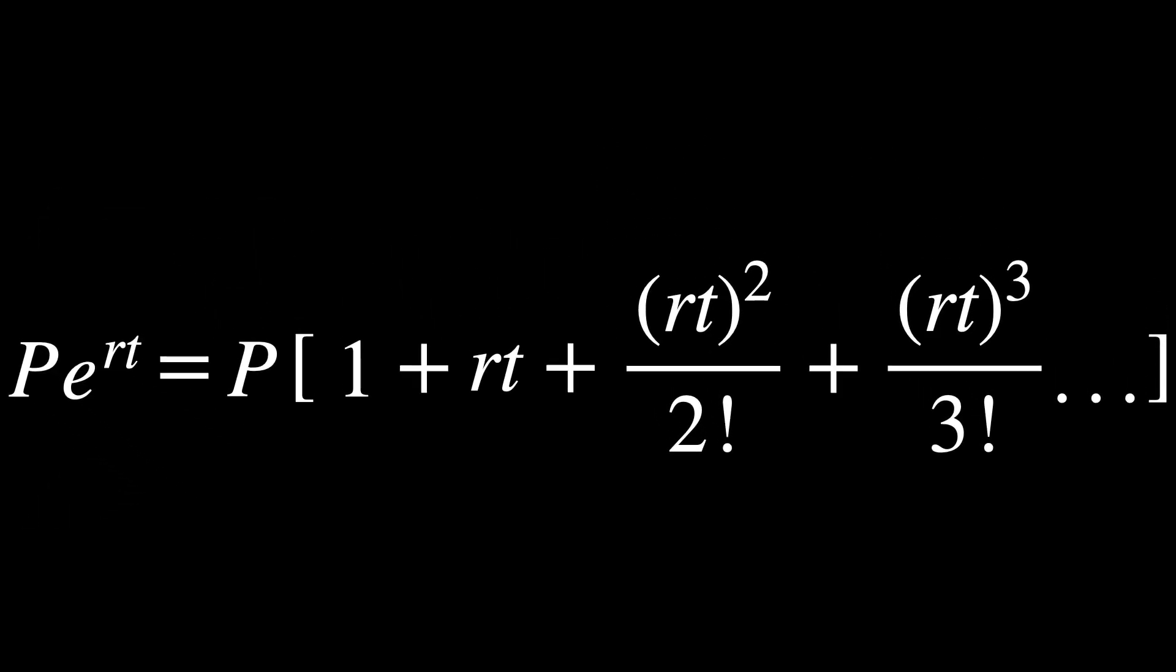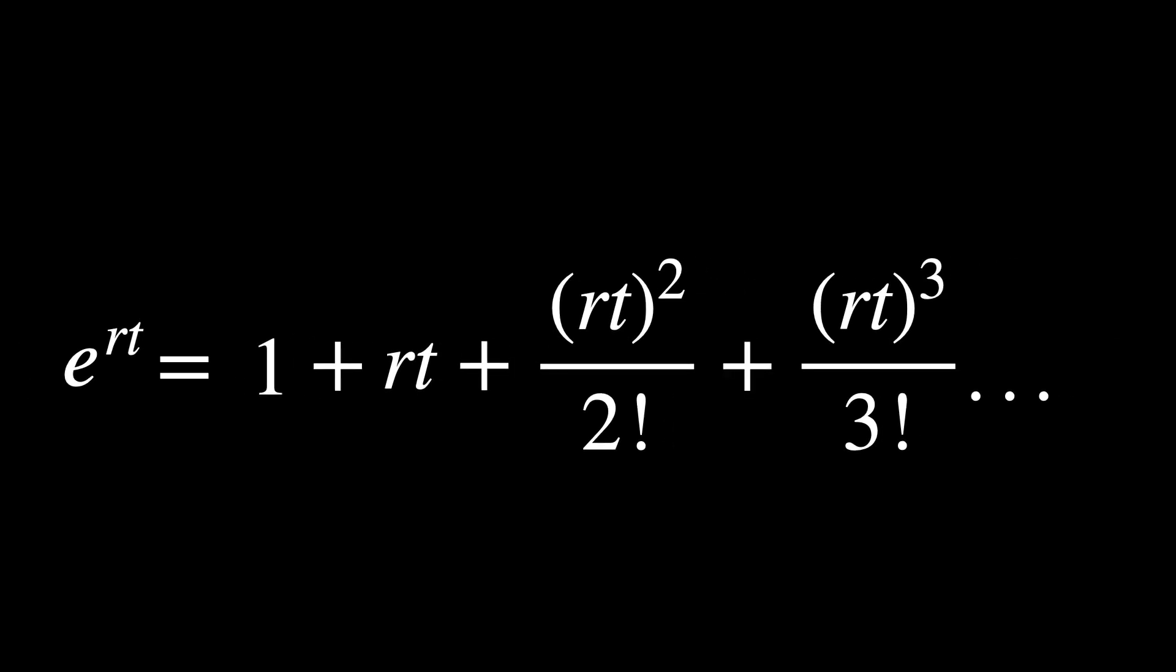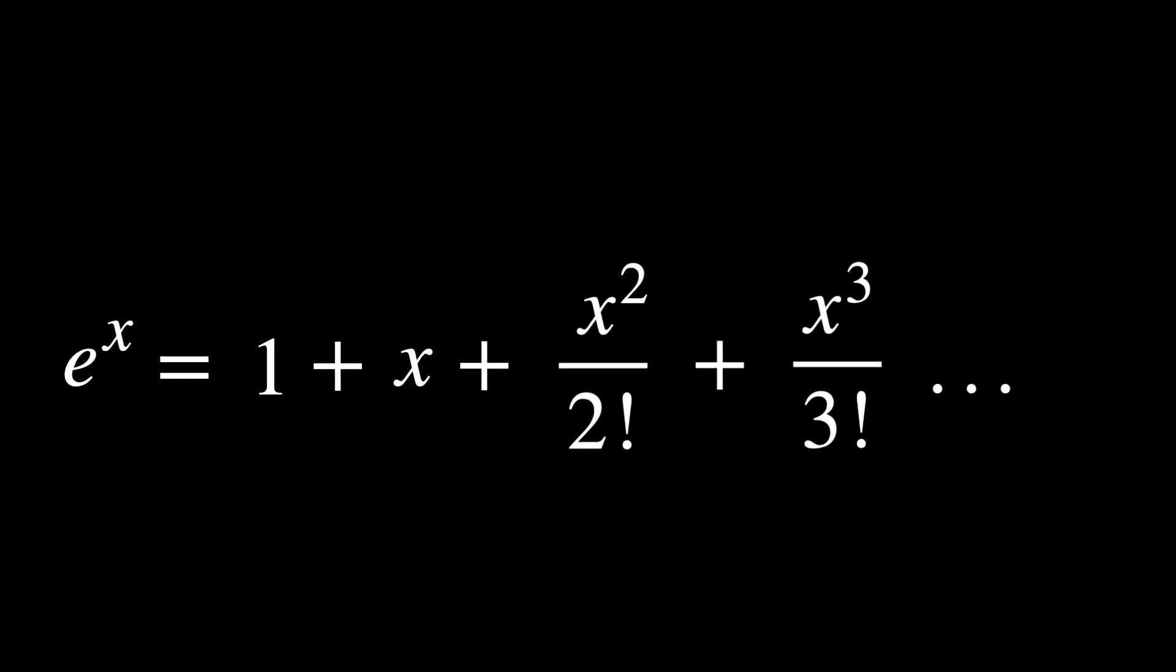If we equate the two solutions, divide out the P, and substitute X equals RT, we have E to the X equals 1 plus X plus X squared over 2 factorial plus X cubed over 3 factorial, and so on.